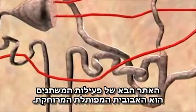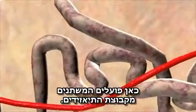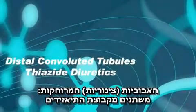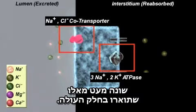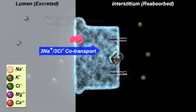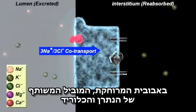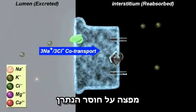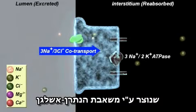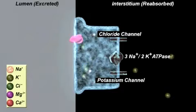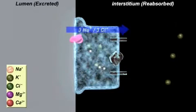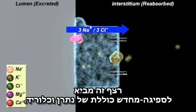The next site for diuretic action is the distal convoluted tubule. This is where the thiazide diuretics act. The transporters present in the distal convoluted tubule are slightly different than those described in the ascending limb. In the distal convoluted tubule, the sodium chloride cotransporter replaces the sodium deficit caused by the sodium-potassium ATPase. The chloride is reabsorbed through chloride channels, and the potassium returns to the interstitium through a potassium channel. This sequence results in overall sodium and chloride reabsorption.